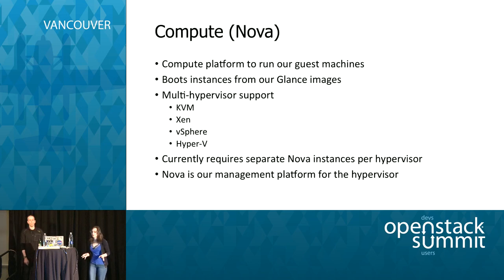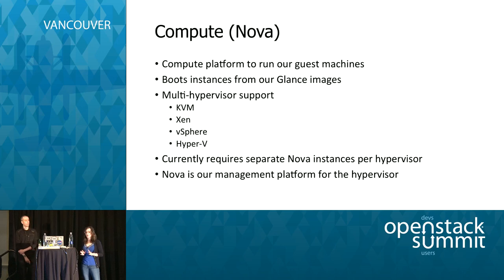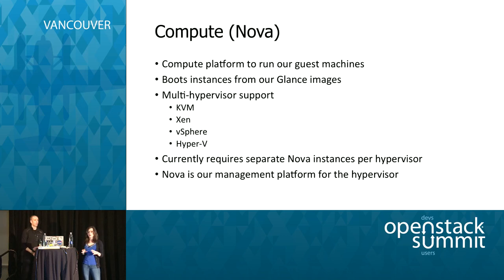Nova is our compute layer — the platform where we run instances, virtual machines, and guests. We boot these from Glance images, and we can support pretty much any hypervisor you want. If you're running VMware today, great — it's supported. If you want KVM, you can do that too. They can all live in harmony in the same OpenStack cloud, though you do need a different Nova controller for each type of hypervisor.